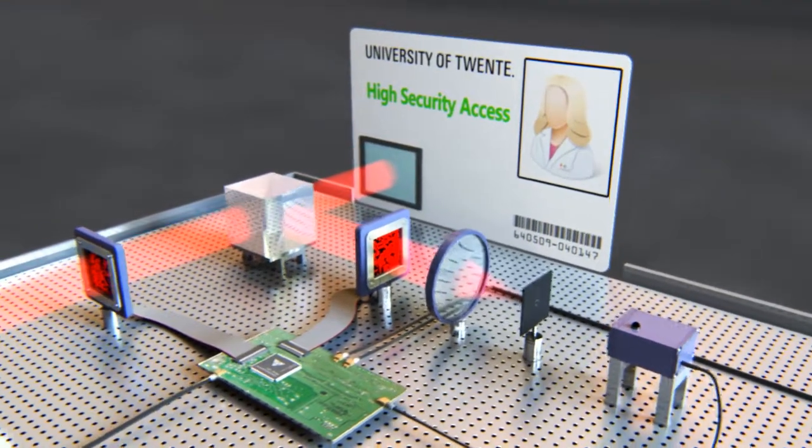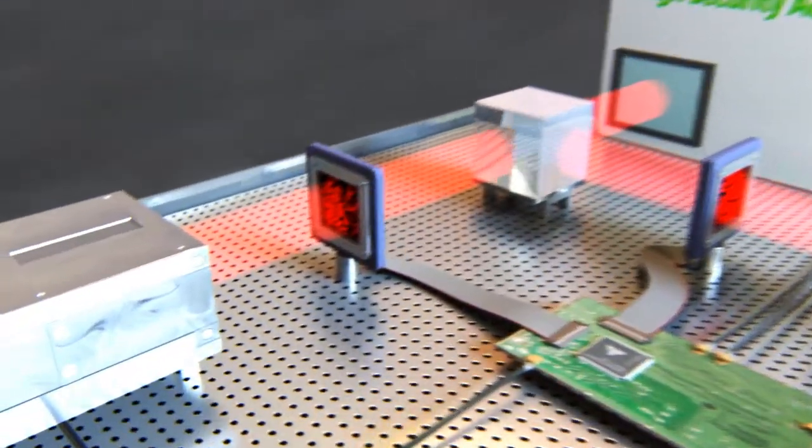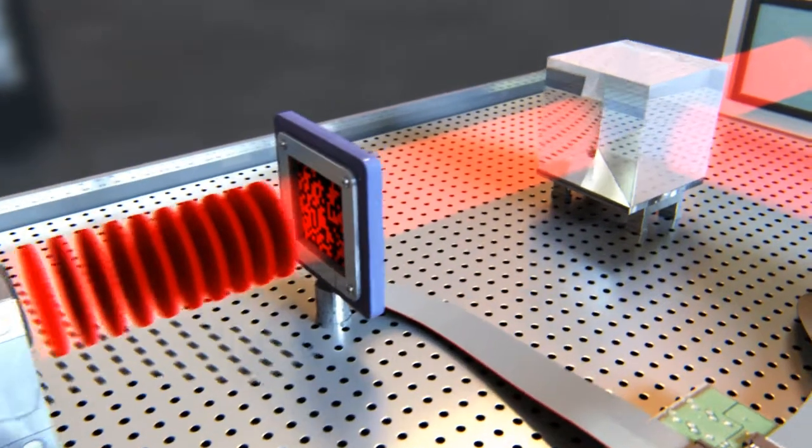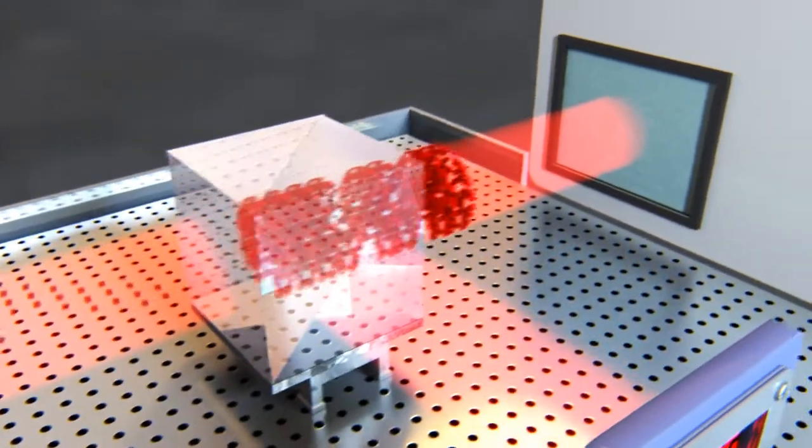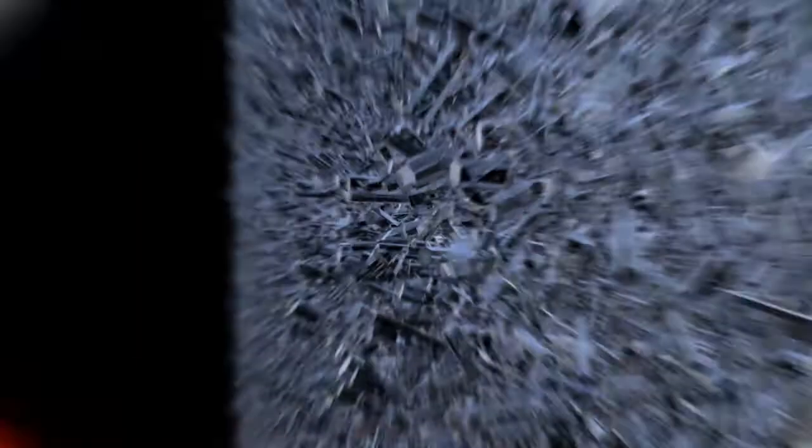A plane wave light pulse made of only a few photons is fired through a spatial light modulator. The modulated photons pass through a beam splitter onto the nanoparticle surface of the keycard.